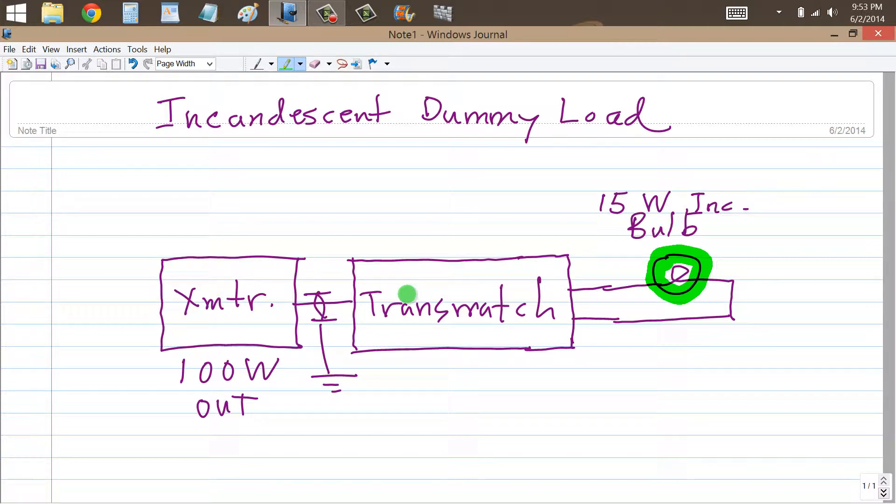Nowadays, your transmitters are a little more finicky about the impedance that they'll accept at the load. So you're going to need a transmatch here between the transmitter and the light bulb.